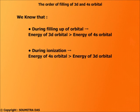While ionization, the electron is lost from the orbital having highest energy and that is obviously the 4s orbital and not the 3d orbital. Here is the confusion.